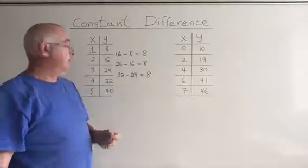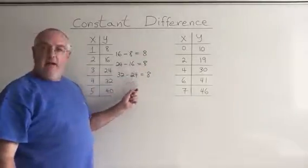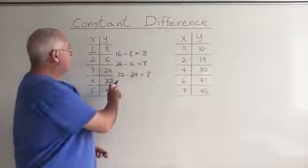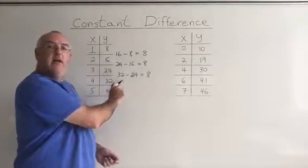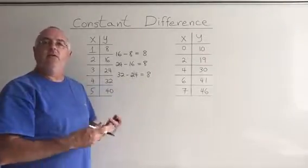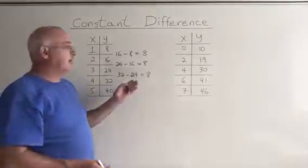8 is the constant difference and this allows me to say with some confidence this looks like a linear relationship and I can go ahead and try to derive the linear equation that goes with it.